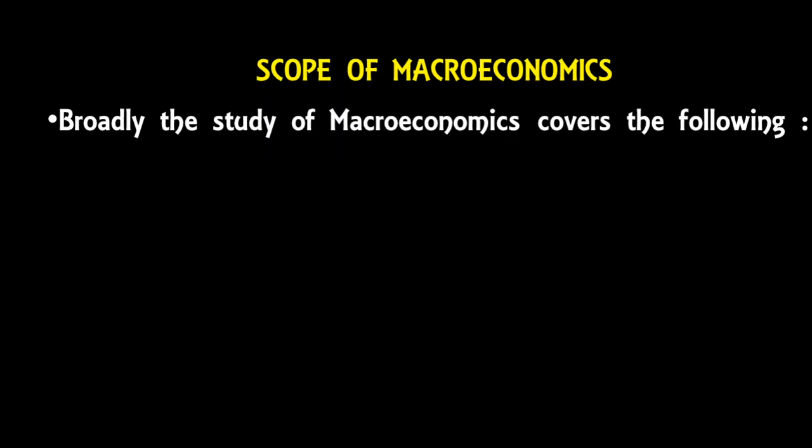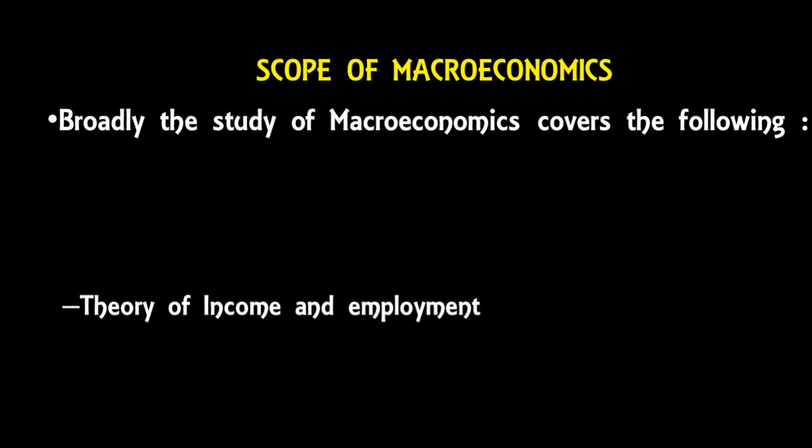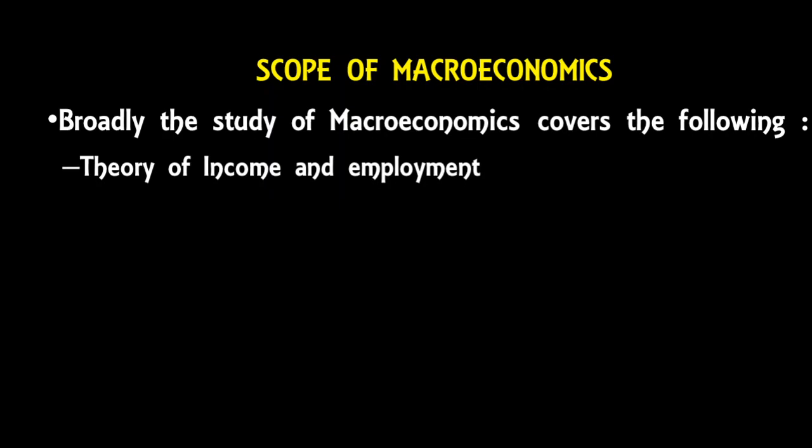Now let's look at the scope of macroeconomics. Broadly, macroeconomics covers the following areas. Number one is the theory of income and employment. Under this we study the determination of national income and employment, and answer the question of why the level of income and employment in a country is at a particular level and how it can be raised. To answer these questions we study theories given by classical, Keynesian, and modern economists.